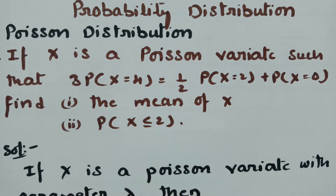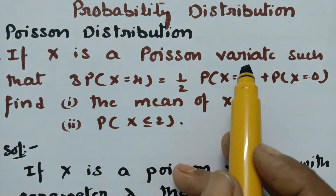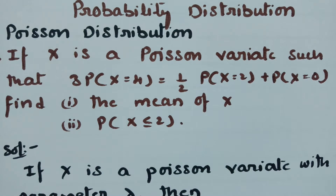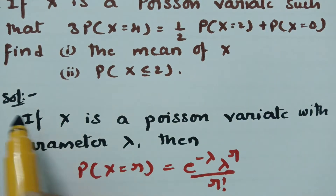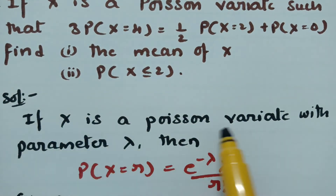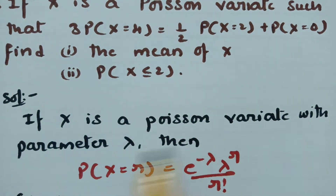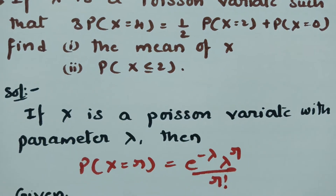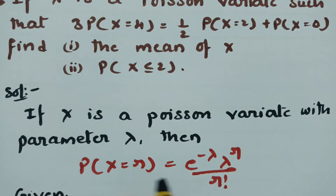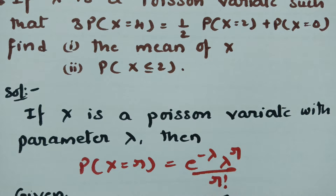x is a Poisson variate with parameter lambda. According to the Poisson distribution, we have the formula: probability of x equals r is equal to e to the power minus lambda, times lambda to the power r, divided by r factorial.